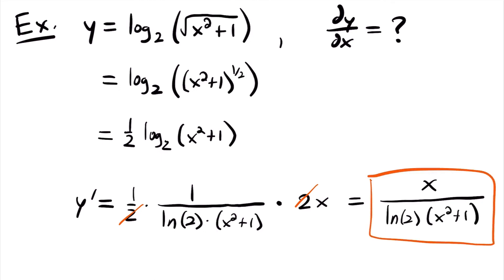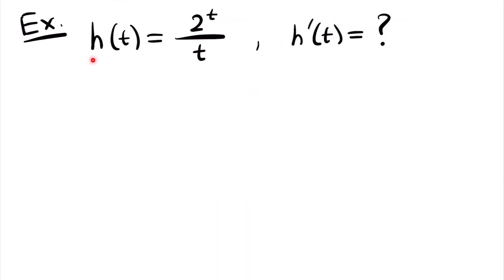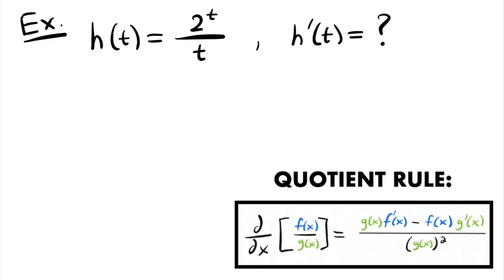Next we have the function h of t is equal to 2 to the power of t divided by t, and we want to find h prime of t. To take the derivative of this function, we are going to need to use the quotient rule because we have a quotient of two functions: 2 to the power of t divided by t. Using the quotient rule, h prime of t will be equal to the denominator function t times the derivative of the numerator function. The derivative of 2 to the power of t is 2 to the power of t times the natural log of the base 2.